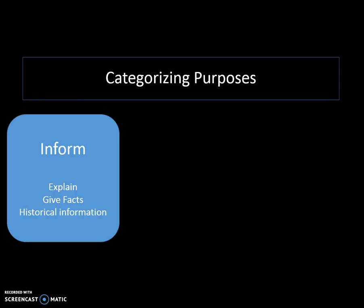If the author is trying to teach me something, then his or her purpose is most likely to inform me. Authors whose purpose is to inform typically wish to provide information, explanations, facts, or historical information to the reader. An example might be a biology textbook or a recipe for cinnamon rolls. Key words that authors will use are like tell, explain, describe, illustrate — these help us know that the author is trying to teach us or inform us about something.